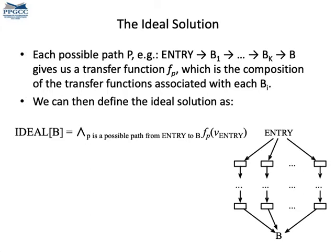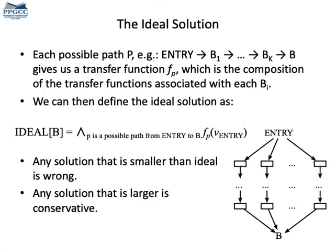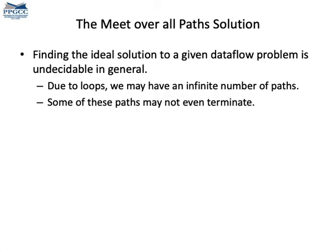The ideal solution for some program point is the merge of all the transfer functions of all the paths that lead to that program point. Any solution that is larger than the ideal solution is conservative, and any solution that is smaller in the lattice sense is wrong. However, finding the ideal solution is impossible — the program might contain an infinite number of possible paths, the program may loop forever, and then we cannot compute the transfer functions for all possible paths.